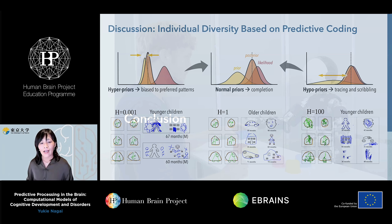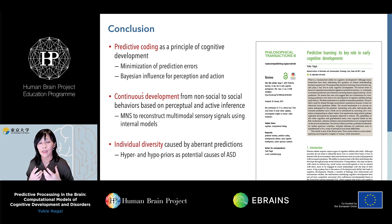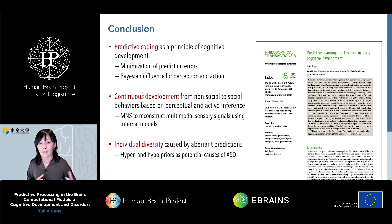To conclude, I explained the predictive coding hypothesis to account for developmental continuity and diversity. We think that predictive coding is a very nice and powerful framework that can explain not only the adult brain, but also the child brain, including individual diversity such as autism spectrum disorder. If you are interested in our work, you can find our paper in Philosophical Transactions B, published in 2019. Thank you very much for your attention, and I'm happy to take your questions.